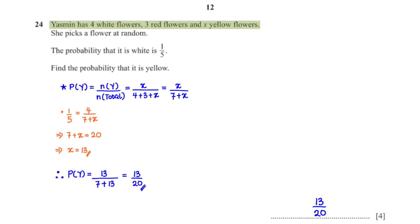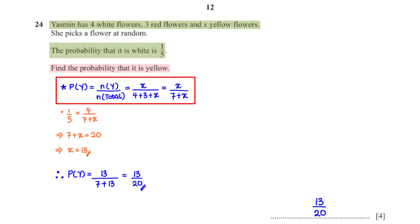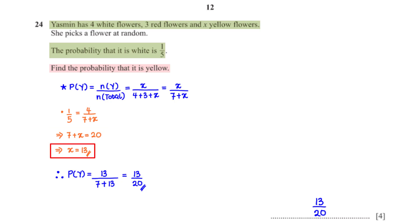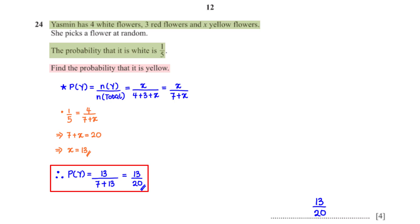Jasmine has four white flowers, three red flowers, and x yellow flowers. She picks a flower at random and the probability it is white is 1/5. Find the probability it is yellow. The total number of flowers is 7 plus x. Setting 4 over (7 plus x) equal to 1/5 and cross-multiplying gives 7 plus x equals 20, so x equals 13. Therefore the probability she picks a yellow flower is 13 over 20.